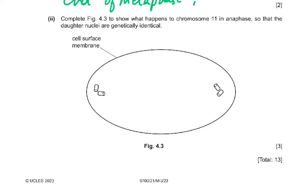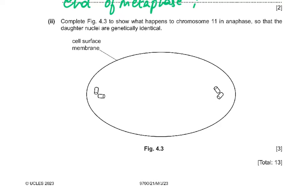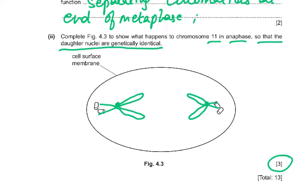Part 2 of question 4: complete figure 4.3 to show what happens to chromosome 11 in anaphase, so that the dotted nuclei are genetically identical. They have shown the cell membrane and centrioles, and you need to complete the diagram for three marks. You need to draw the centromere.